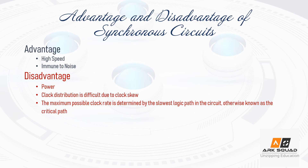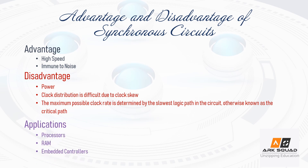The maximum possible clock rate is determined by the slowest logic path in the circuit, and it is also called as the critical path. Some of the applications are: it is used in processors, RAM, and temperature controllers.